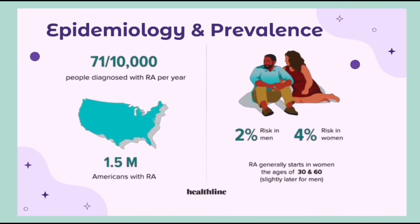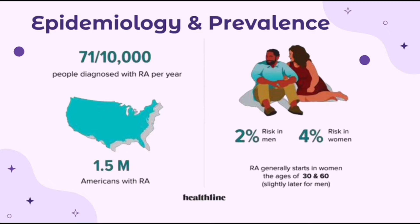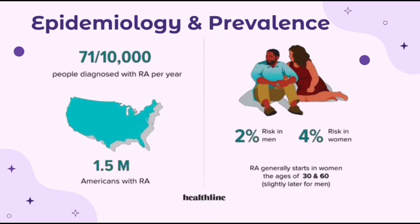Now let's look at the epidemiology and prevalence of rheumatoid arthritis. Out of every 100,000 people, 71 are diagnosed with RA every year. About 1.5 million Americans have RA. Women are about 2 to 3 times more likely to get RA than men, and hormones in both genders may play a role in either preventing or triggering it. RA generally starts between the ages of 30 and 60 in women, and somewhat later in life in men.